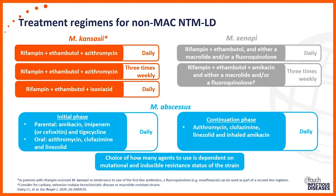For Mycobacterium xenopi, you have a choice between a daily or three-times-a-week regimen. The daily regimen uses three drugs: rifampin, ethambutol, and either a macrolide or fluoroquinolone. If doing the three-times-a-week regimen, you would be on four drugs — rifampin, ethambutol, IV amikacin, and either a macrolide or fluoroquinolone.